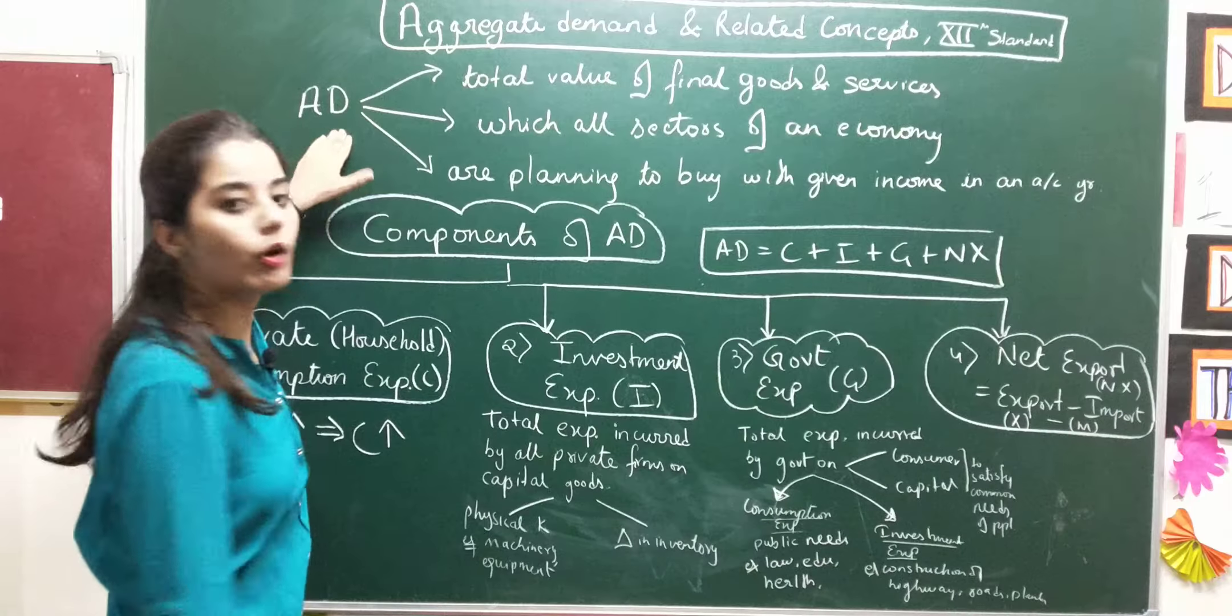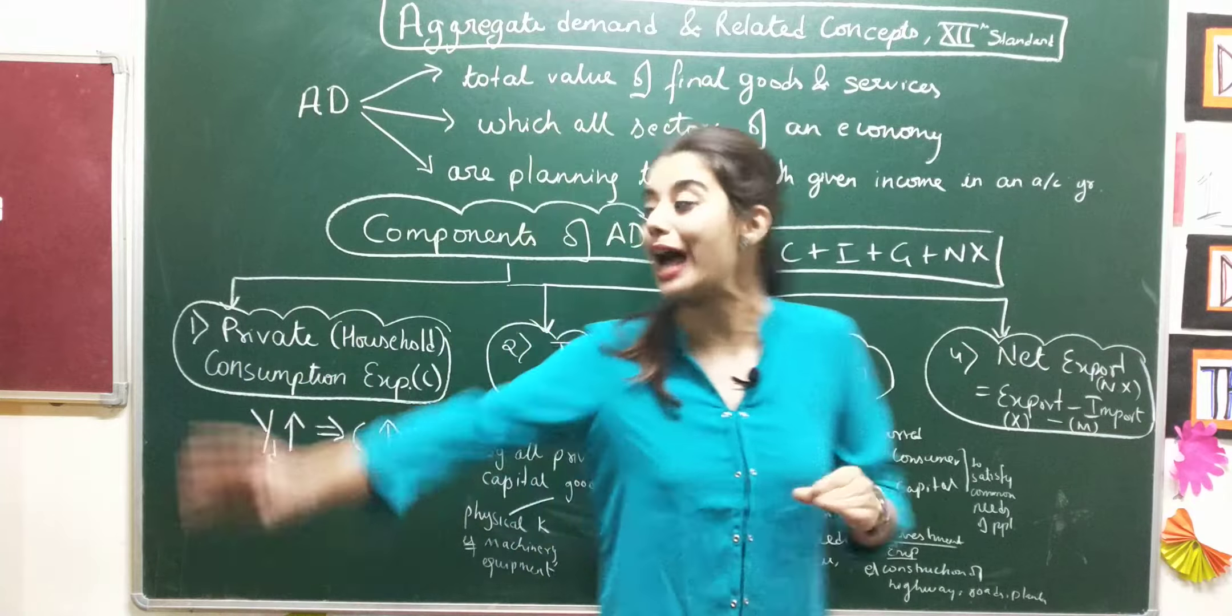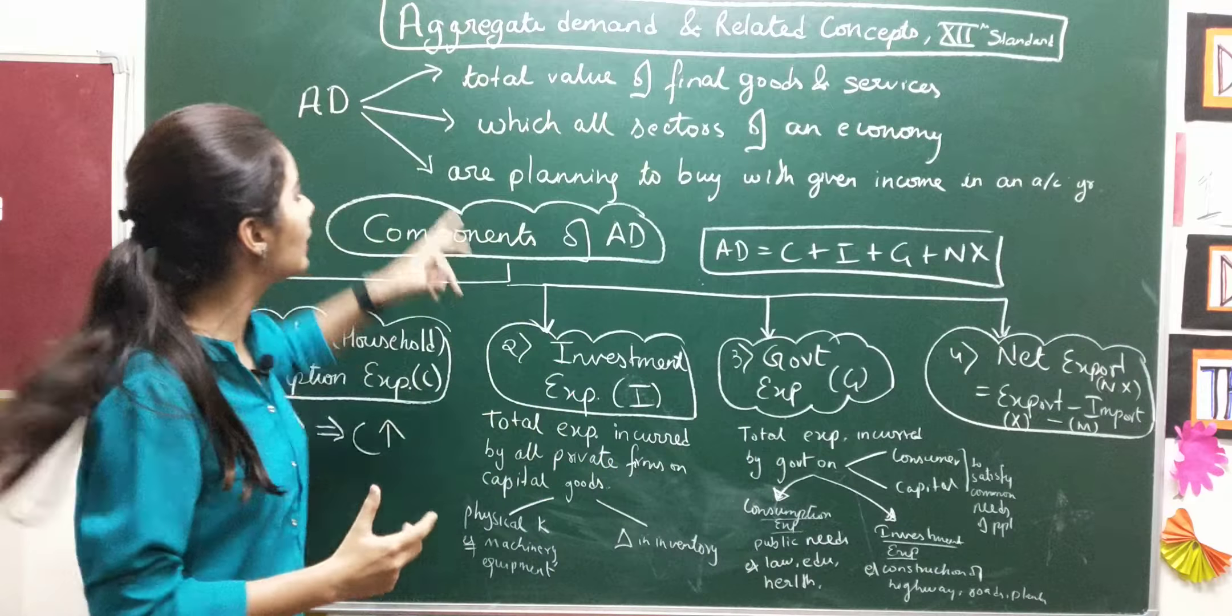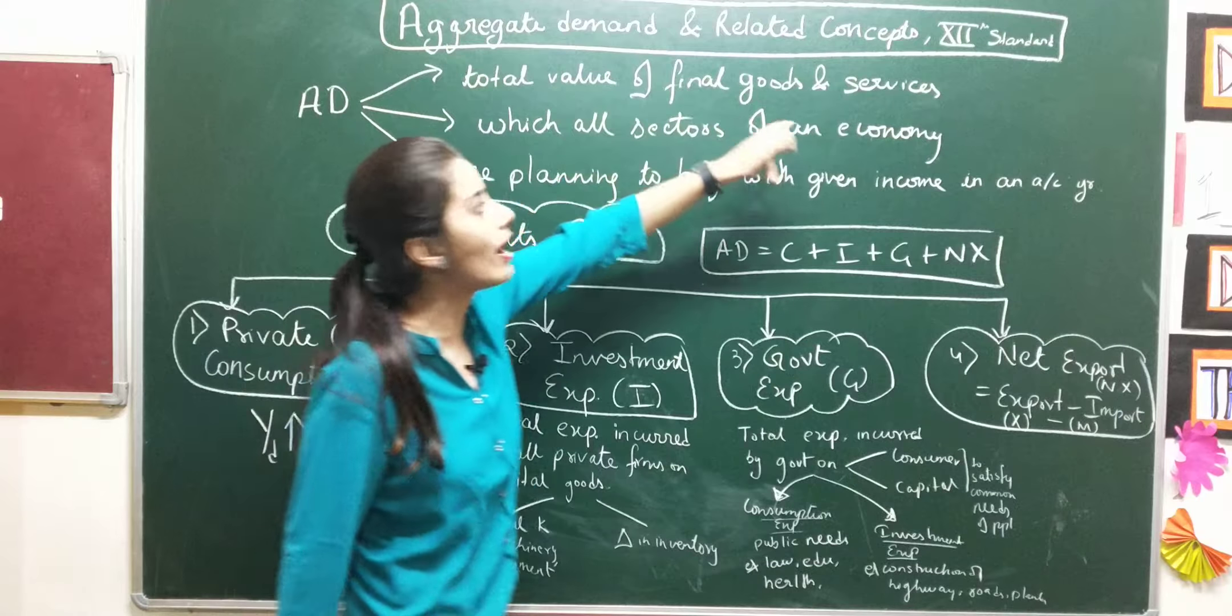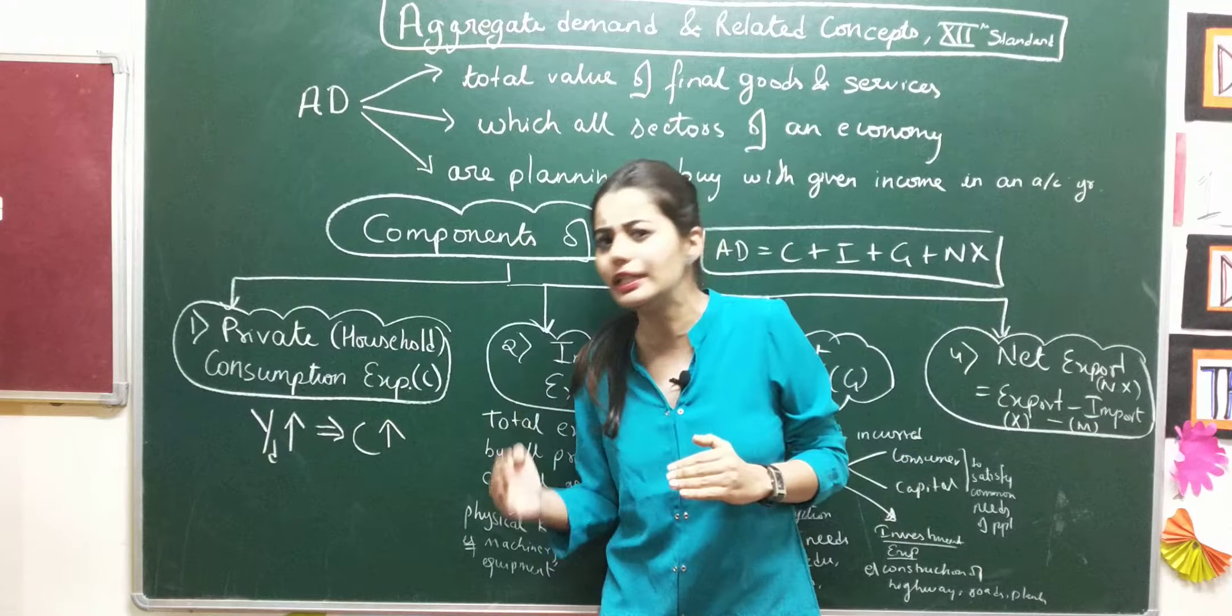Now class, if I talk about Aggregate Demand, it is also known as AD. Aggregate Demand is the total value of final goods and services. Meaning, in one year, overall, how many goods are demanded.